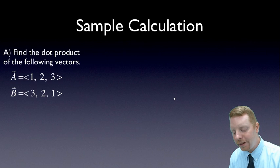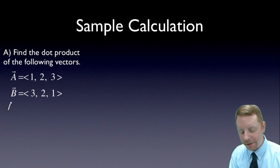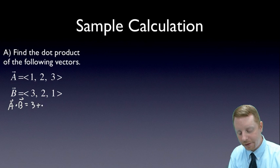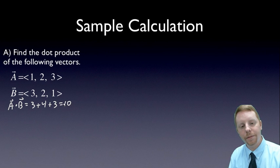So let's try it out. Find the dot product of the following vectors, where A = <1, 2, 3> in the x, y, z components, and B = <3, 2, 1>. In this case, A·B is going to be the product of the x components, 3 times 1, plus 2 times 2, plus 3 times 1, or 10.